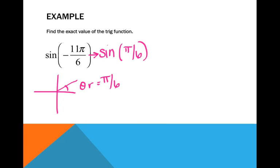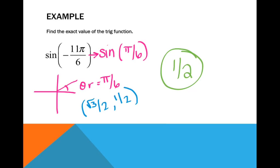Pi over 6 is the same as your ring finger, so I put down my ring finger. My ordered pair using the hand trick is root 3 over 2, comma, 1 half. Since my angle is in the first quadrant, those signs stay the same — first quadrant is positive, positive. Sine is my y coordinate, and my y coordinate is positive 1 half. So the exact value of sine of pi over 6 is 1 half.